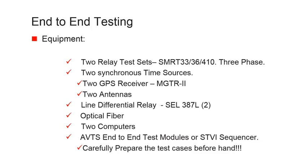This is a list of equipment required for end-to-end testing according to Megger: two relay test sets — we would say the Smart36, Smart410, or any test set of your preference; two synchronous time sources — Megger provides the MTTR, which we'll talk about later; the line differential relay or any relay participating in the scheme; optical fiber or any communications medium that guarantees proper relay communication; and two computers, which are unavoidable today for recording, configuring, and communicating with the relays.